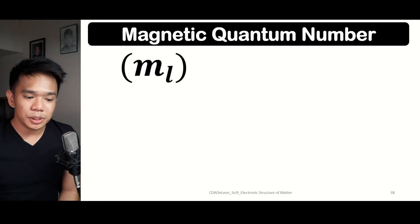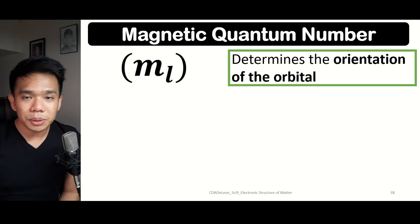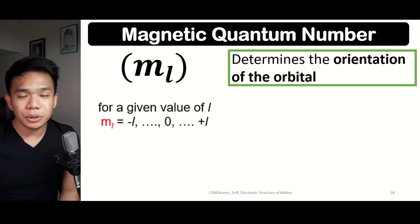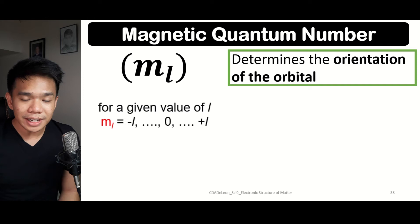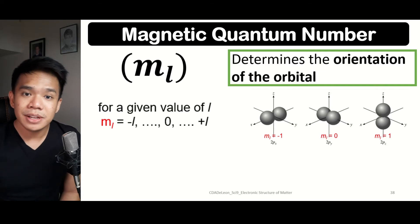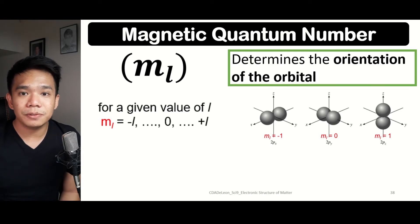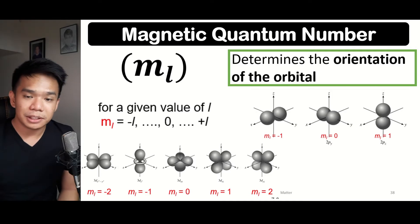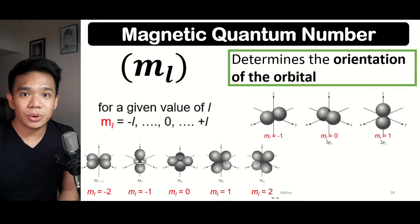Next, we have the magnetic quantum number, represented by M sub L, which determines the possible orientations of the orbital. The magnetic quantum number is expressed through the value of L as integers, either positive or negative. For example, for an azimuthal quantum number value of 1, the possible magnetic quantum numbers are −1, 0, or 1, representing the possible orientations of the orbitals. For an azimuthal quantum number with a value of 2, its possible values for the magnetic quantum number can be −2, −1, 0, 1, or 2.